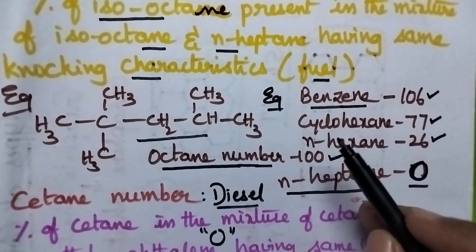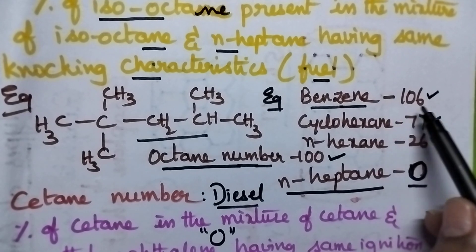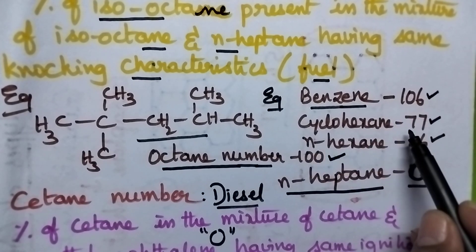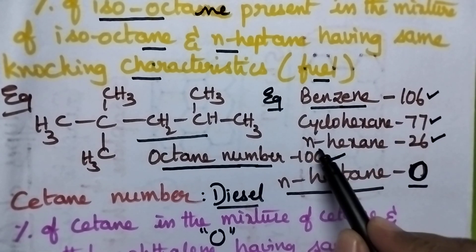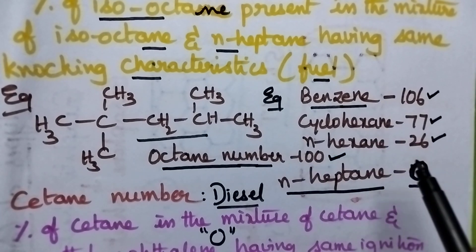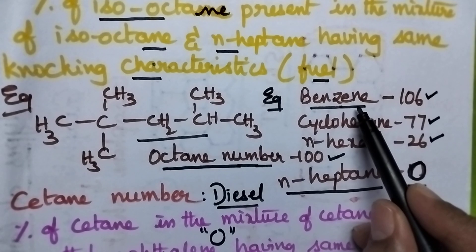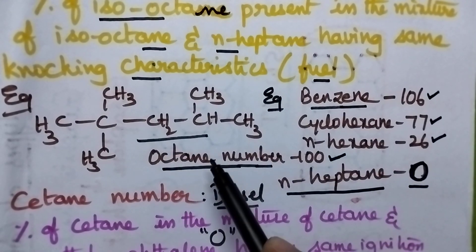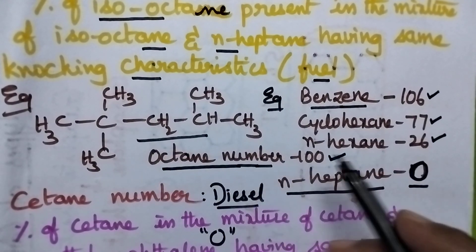Let us see few other examples. Benzene octane number is 106, cyclohexane octane number is 77 whereas n-hexane octane number is 26. From all these examples it is very clear that aromatic hydrocarbons and branched hydrocarbons will have high octane number whereas straight chain hydrocarbons will have least octane number.